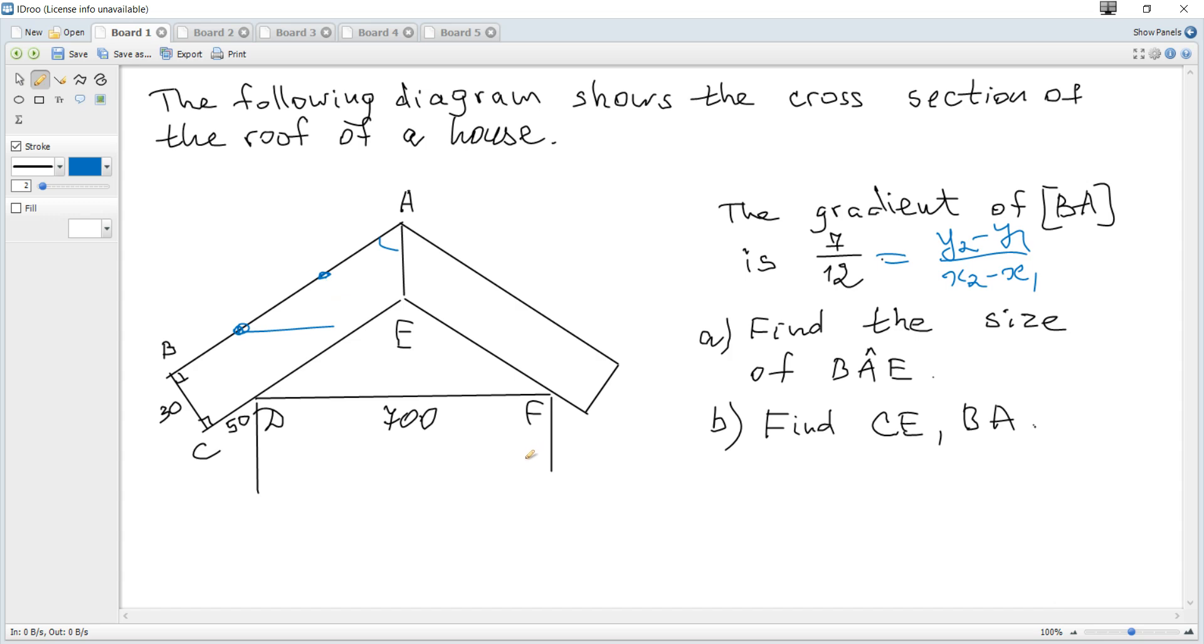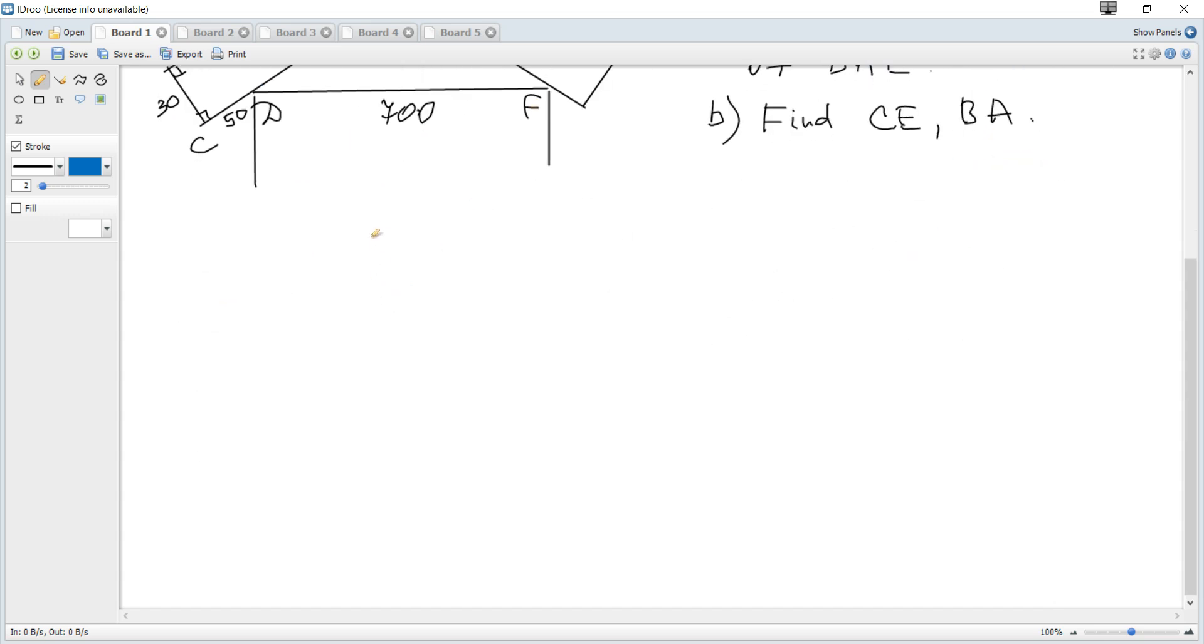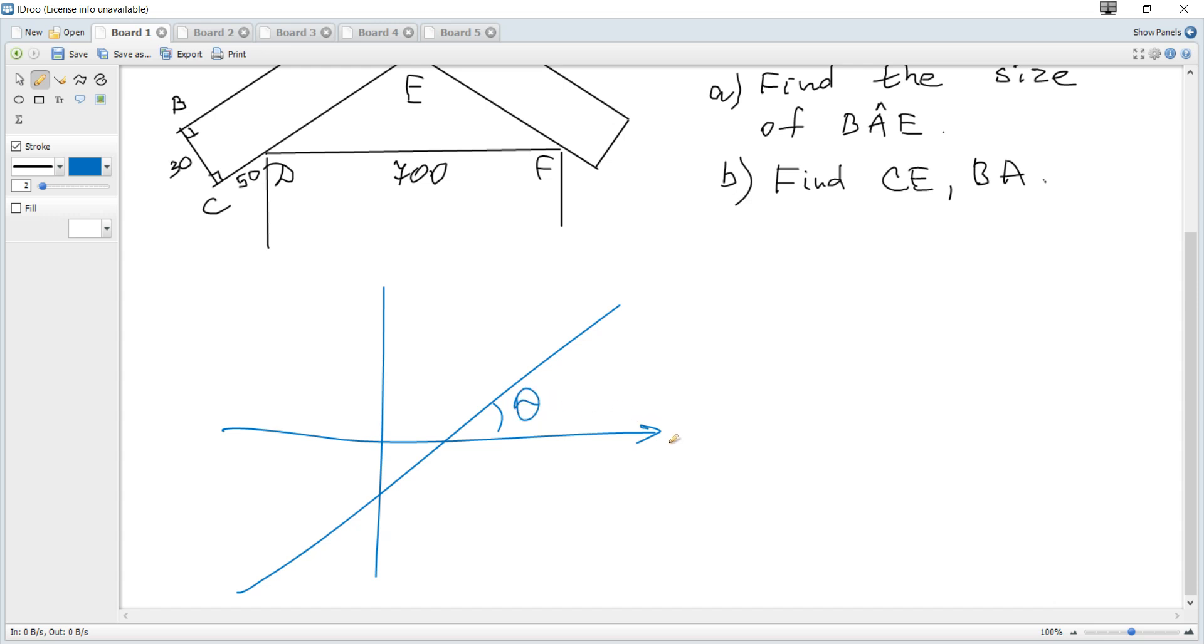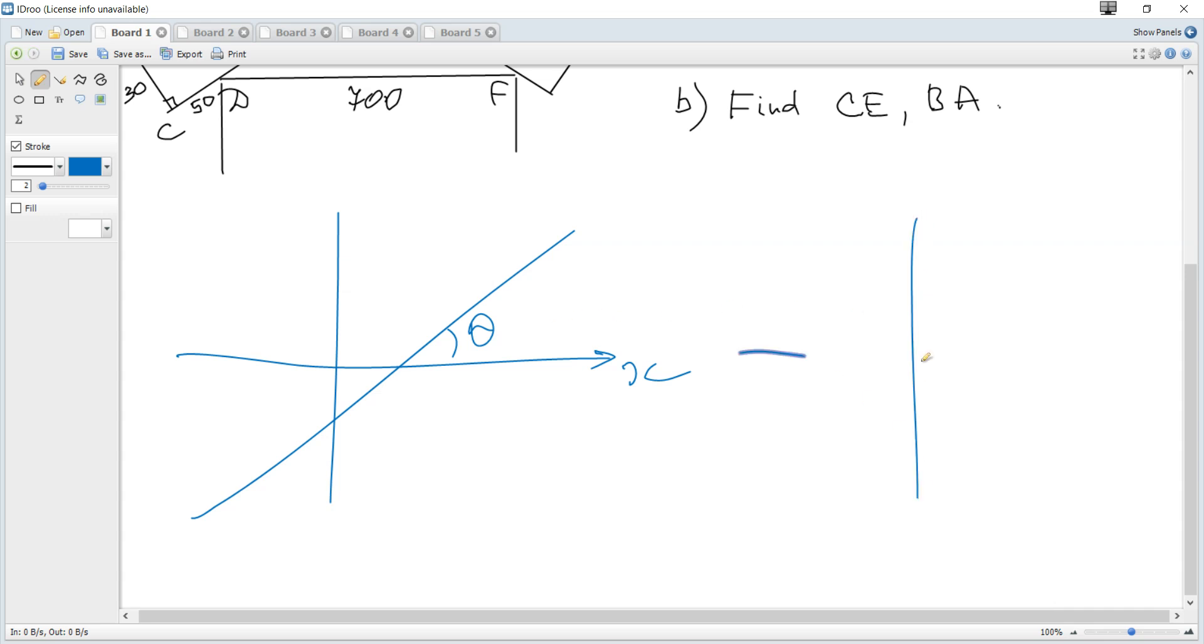In general, it's useful to remember that for a given line, tangent of the angle between the line and the positive direction of x-axis is equal to the gradient of the line. When line is decreasing it looks like this. So tangent theta is equal to the gradient of the line.